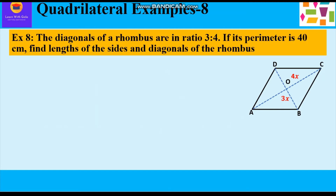The diagonals of a rhombus are in the ratio of 3:4. If its perimeter is 40 centimeters, find the length of the sides and diagonals of the rhombus. The diagonals are given in the ratio 3:4, perimeter is 40 centimeters, and we have to find the length of the side and the length of the diagonals.